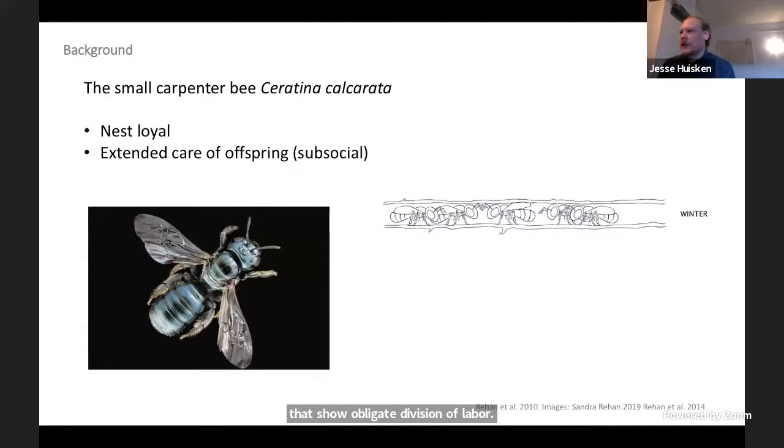The small carpenter bee Ceratina calcarata is a stem nesting bee that has a number of traits that make it particularly useful for studying social behavior, particularly experimentally. They're nest loyal and show extended care of their offspring. So they're subsocial, occupying the simplest category of social behavior in Hymenoptera.